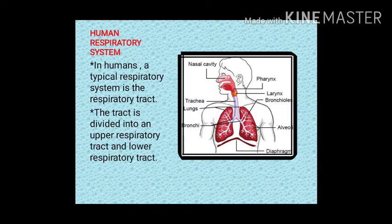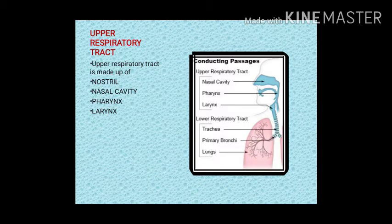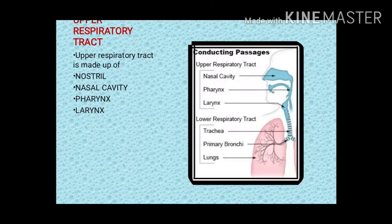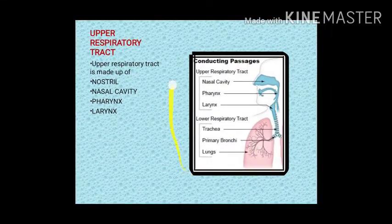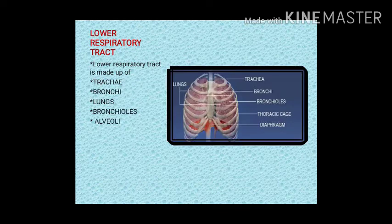In humans, a typical respiratory system is a respiratory tract. The tract is divided into an upper respiratory tract and a lower respiratory tract. The upper respiratory tract is made up of nostril, nasal cavity, pharynx, and larynx. In this diagram you can see the upper and lower respiratory tract. The lower respiratory tract is made up of trachea, bronchi, lungs, bronchioles, and alveoli.